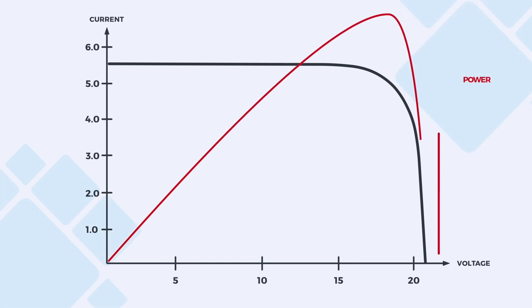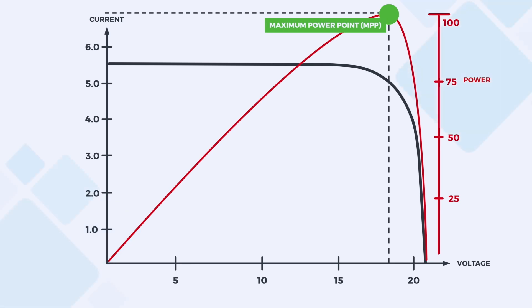The red line shows the total power output. Voltage multiplied by current gives us output power, which is why it has a near linear increase until the sharp decline. At the intersection of peak current and voltage, we get the maximum power point, or MPP.